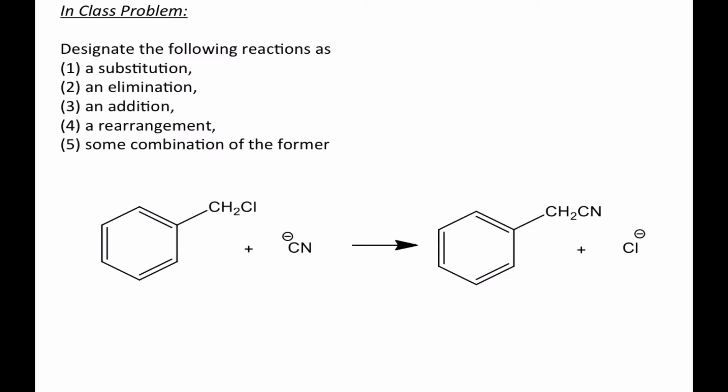A common theme in our early studies of organic chemistry is learning how to classify structures as well as reactions. This helps us organize them mentally so that they're easier to recall when we need them in a later context. This problem asks us to classify the reaction shown into one of the four categories that we see up here.